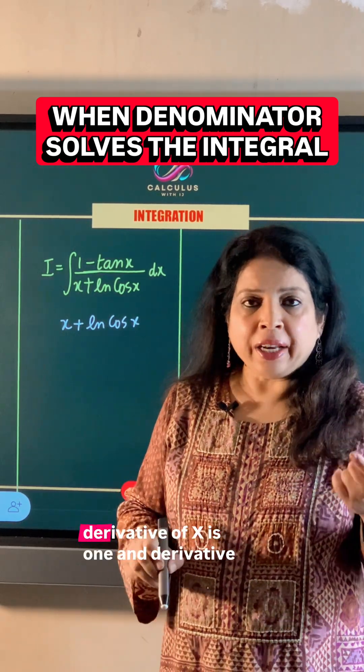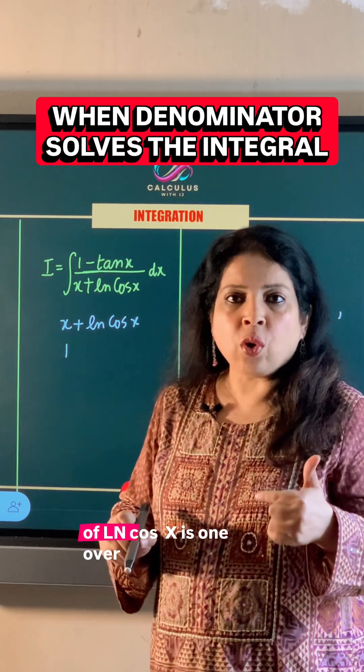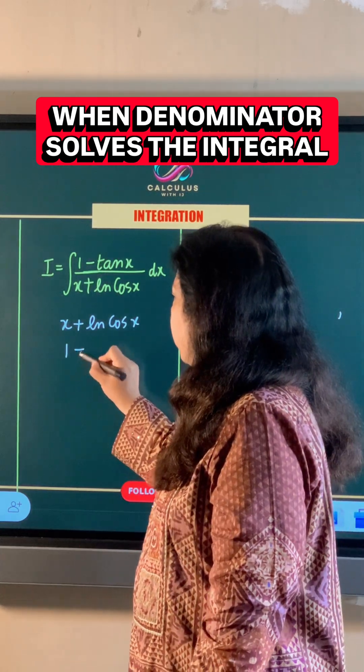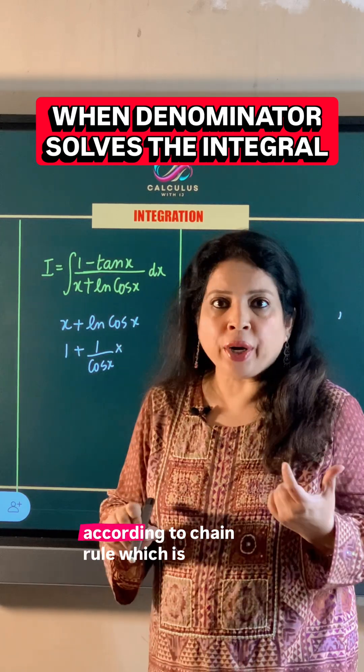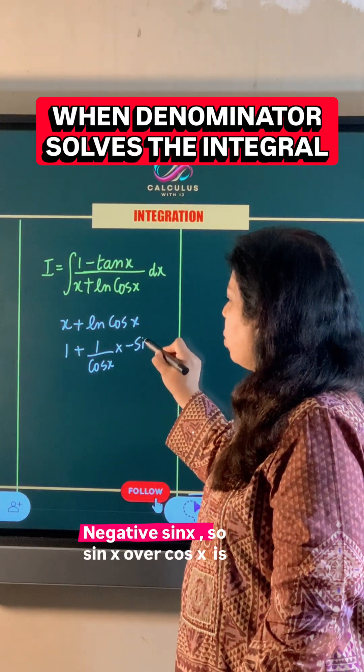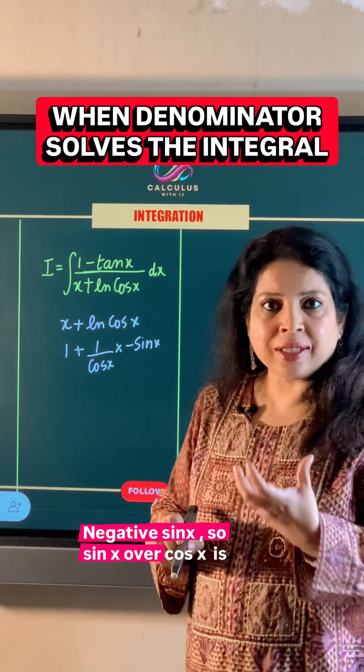Derivative of x is 1, and derivative of ln cos x is 1 over cos x multiplied by derivative of cos x according to chain rule, which is negative sin x. So sin x over cos x is tan x.